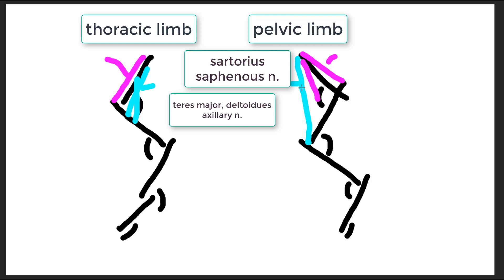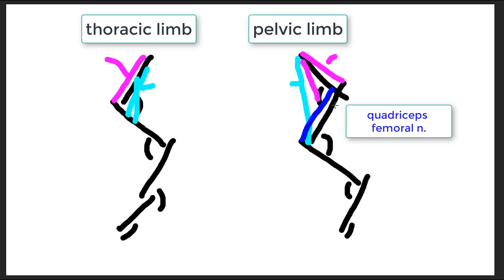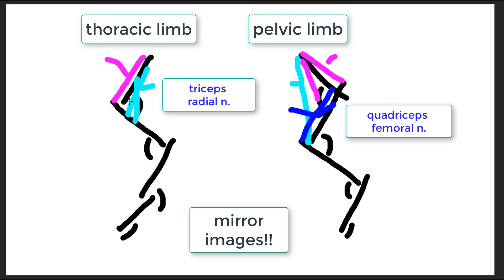Continuing in the pelvic limb, we can draw a muscle spanning from the hip bone to the short end of the lever at the tibia and fibula. Additional muscles originating from the femur also insert on this short end of the lever. These are the muscles of the quadriceps femoris — some spanning two joints, some arising only from the long bone. Upon contraction they extend the stifle joint, and they are innervated by the femoral nerve.